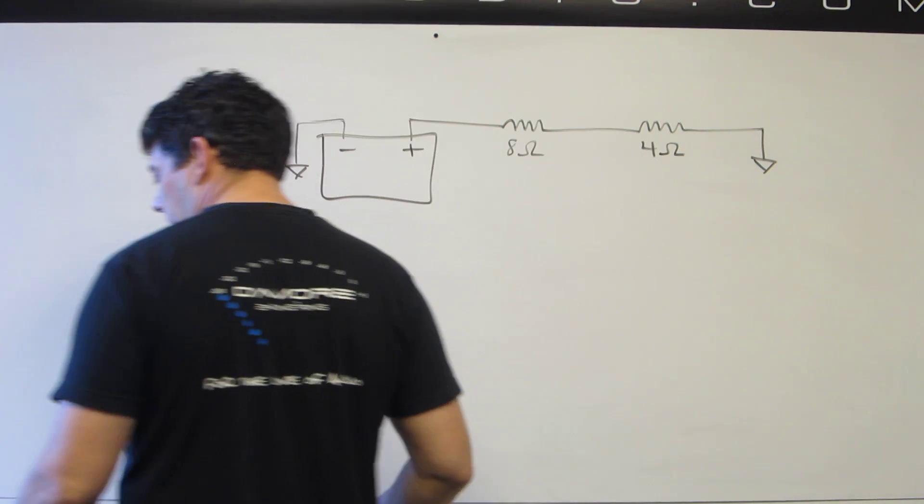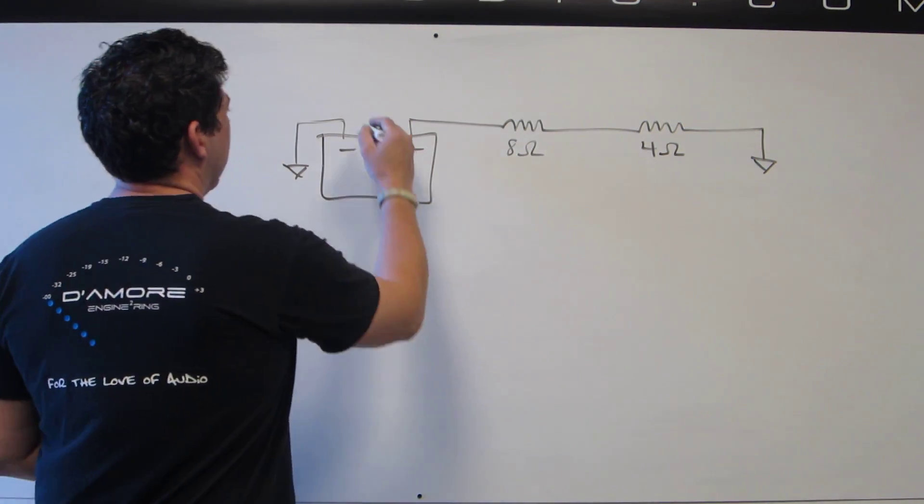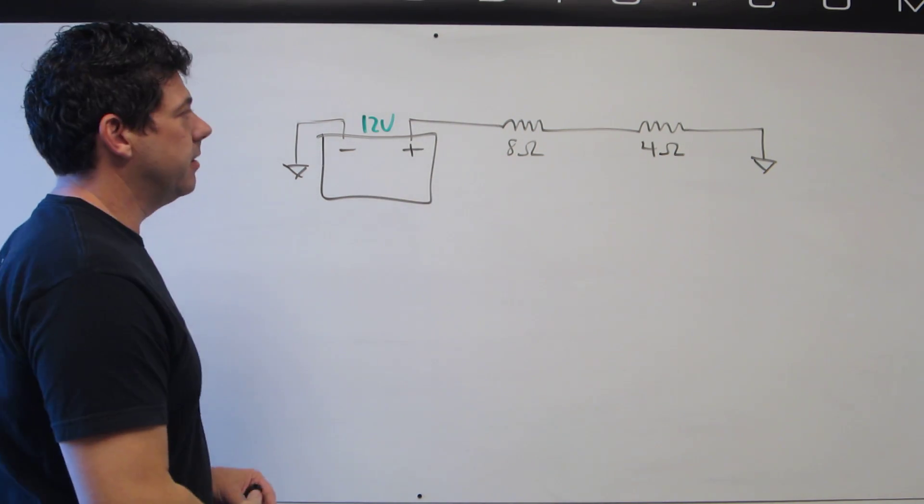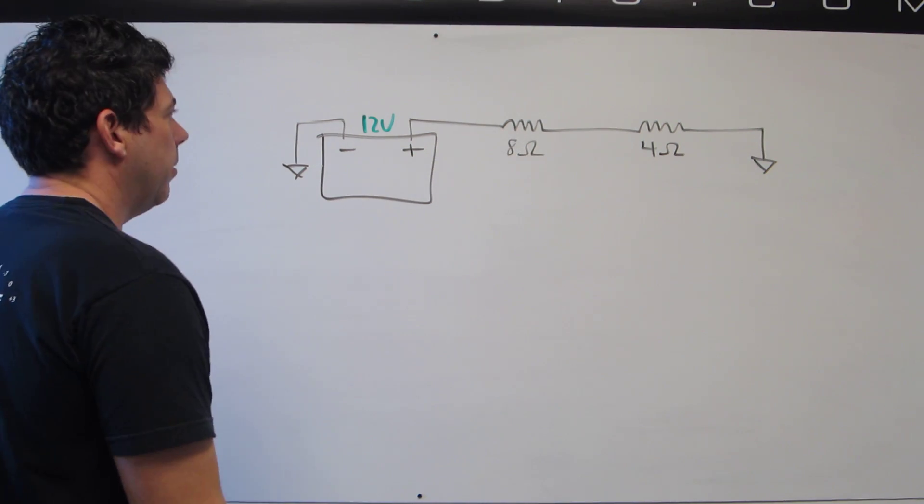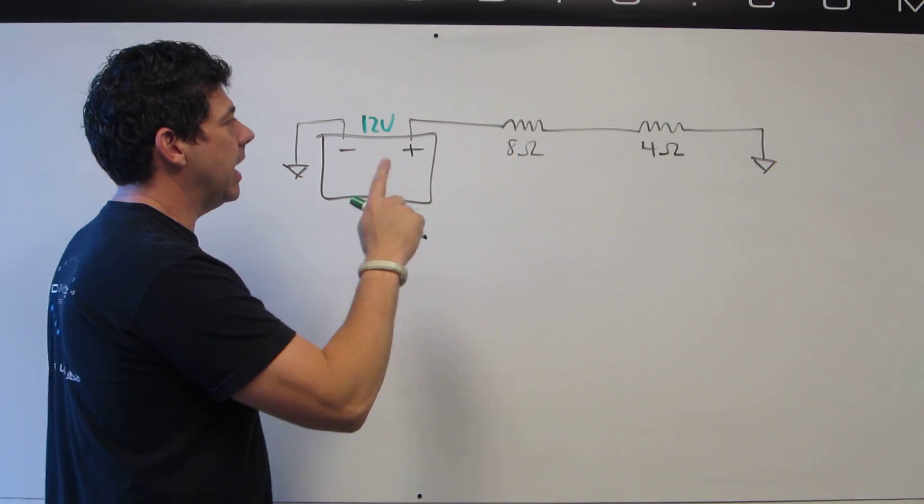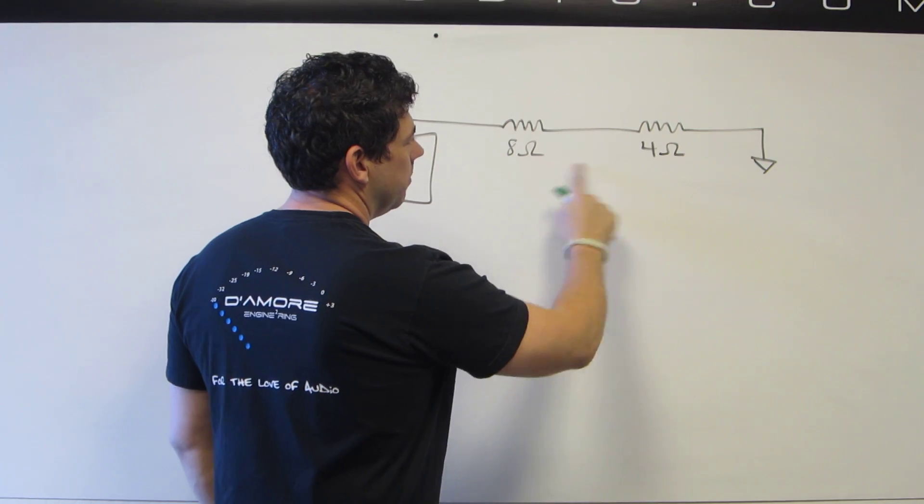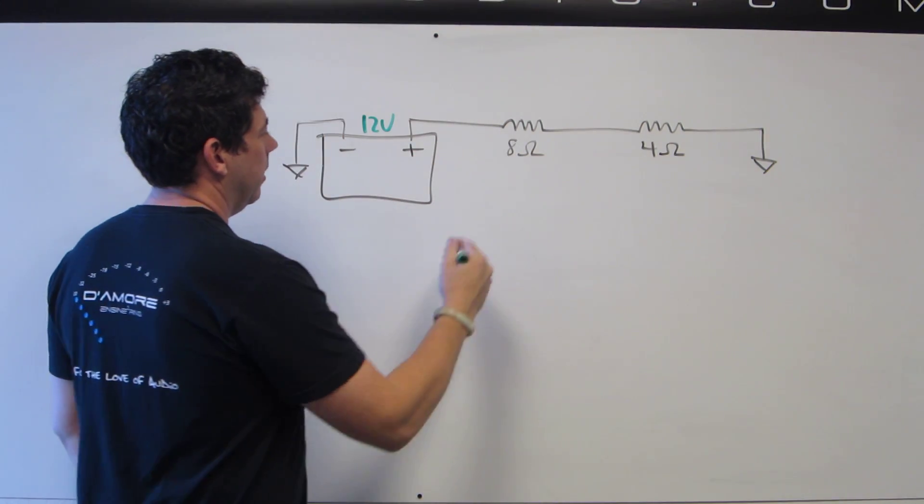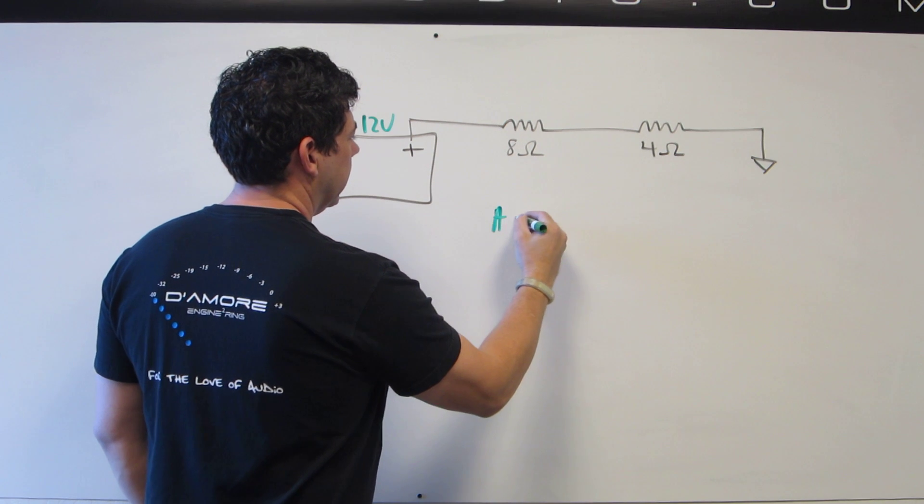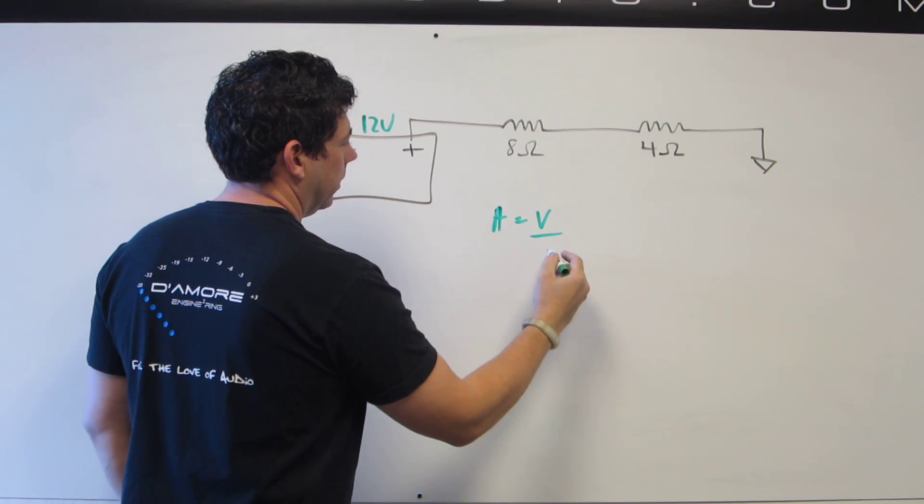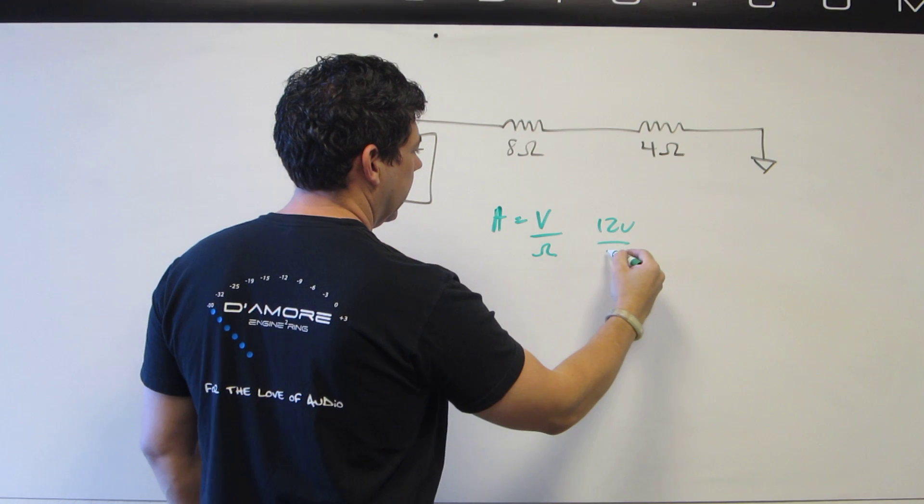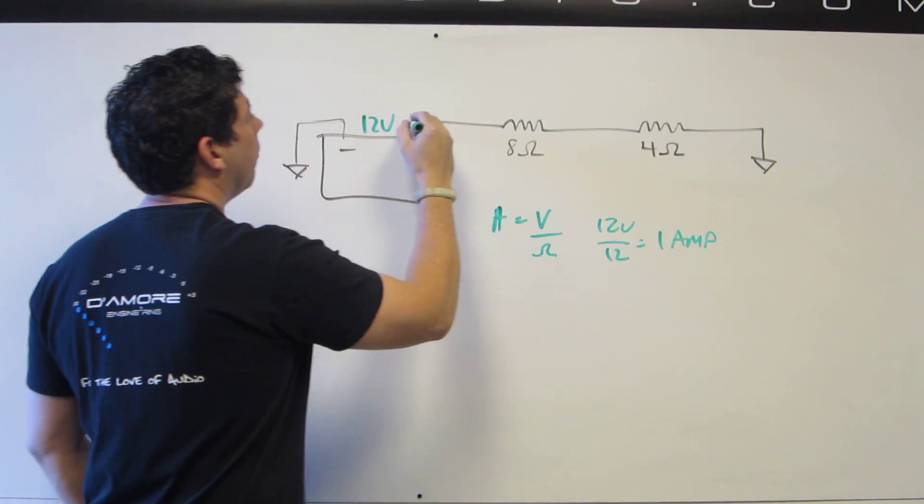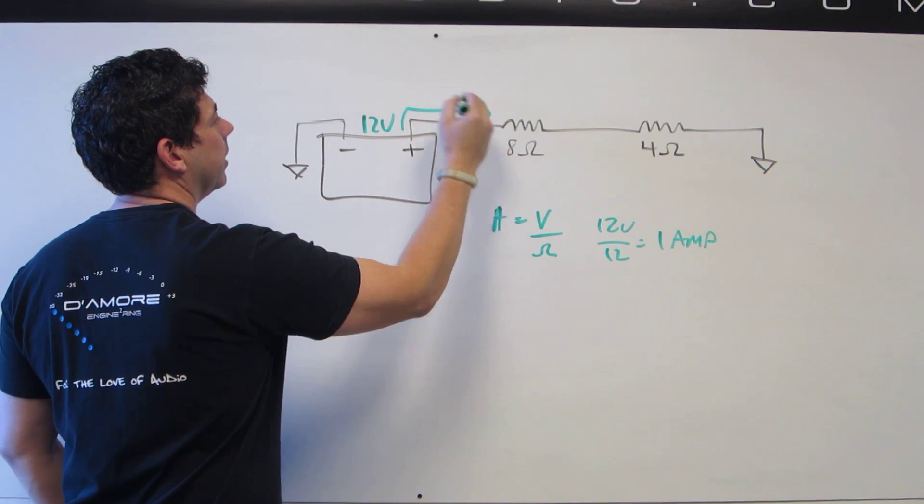Okay, so here's the homework problem. We have a 12 volt battery connected to two resistances in series. We know when we put resistors in series that the resistance adds up, so 8 ohms and 4 ohms means the resistance of this whole thing will be 12 ohms. We know that the current equals voltage over impedance. We have 12 volts and 12 ohms, so that's going to equal 1 amp. So we have 1 amp of current flowing this way.